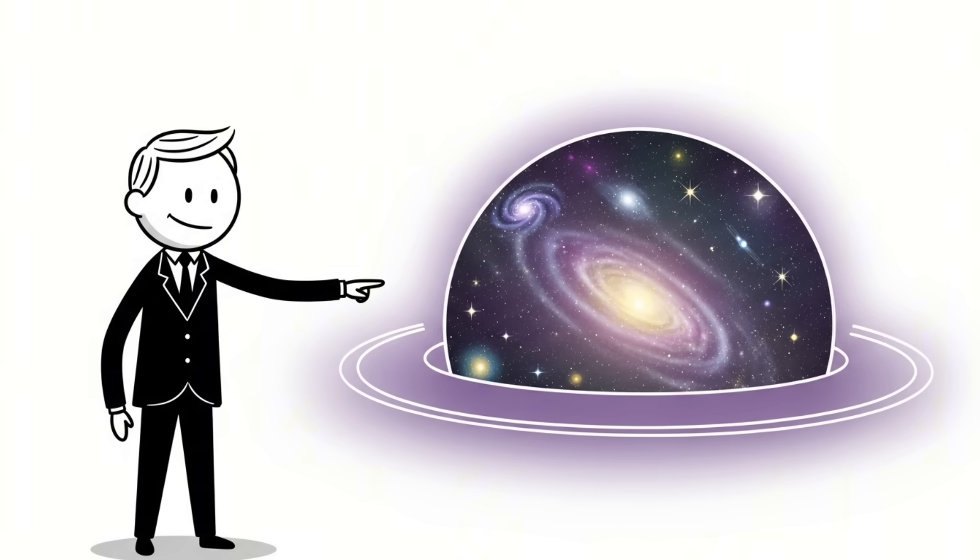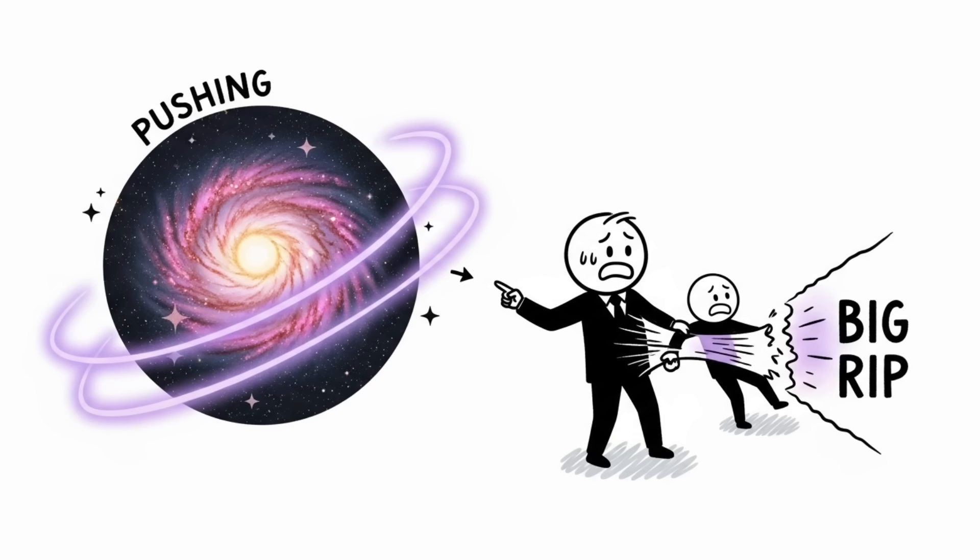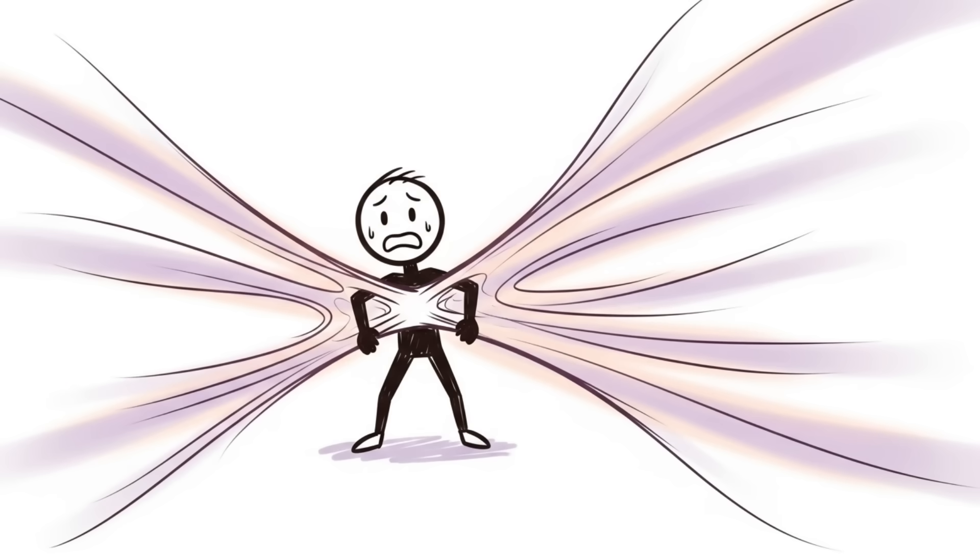Astrophysicist Michael Turner called it dark energy, and this discovery led to a terrifying theory called the big rip. As the universe expands faster, it will eventually tear apart galaxies, stars, and planets. And eventually, it will become a force so strong it will rip the atoms of your body apart from each other.